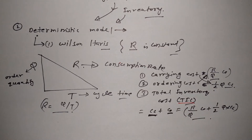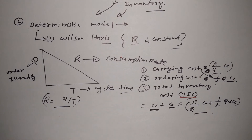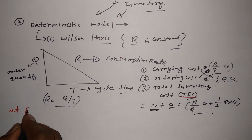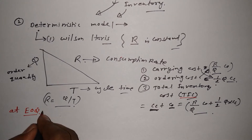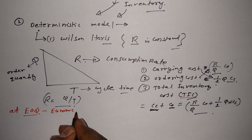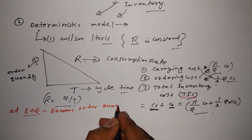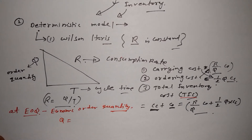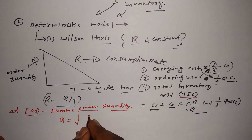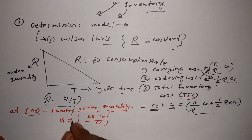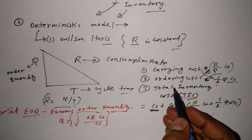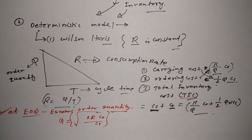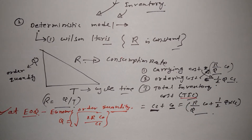Now let's move to EOQ — Economic Order Quantity. At EOQ, Q = √(2RC₀ / CC). Because in the place of Q we substitute √(2RC₀ / CC), where R is the consumption rate, C₀ is the ordering cost, and CC is the carrying cost.